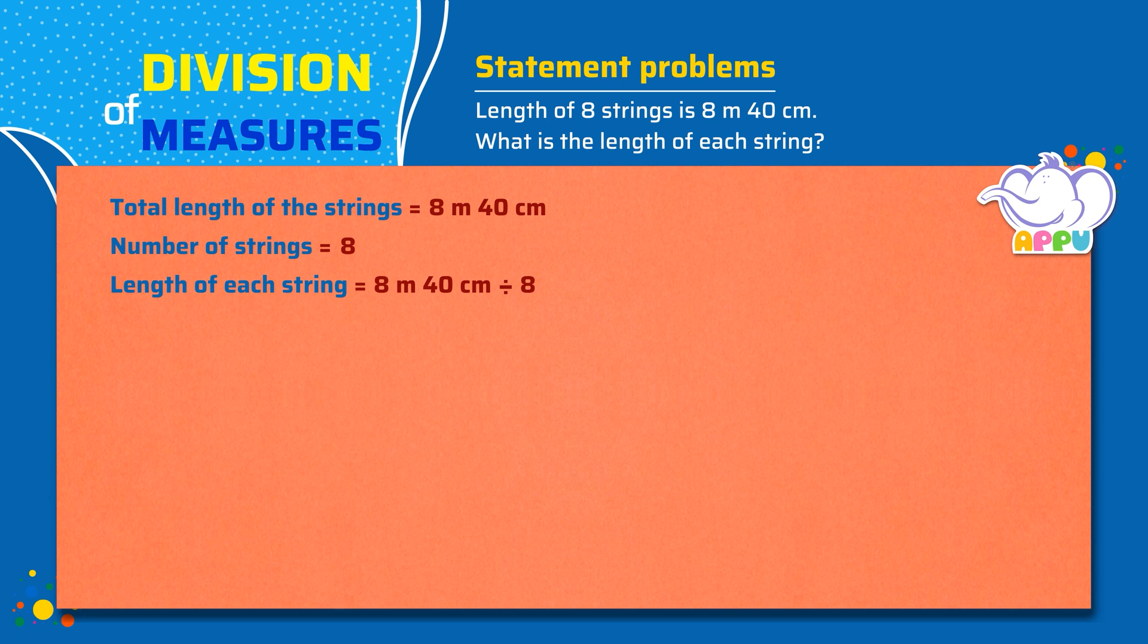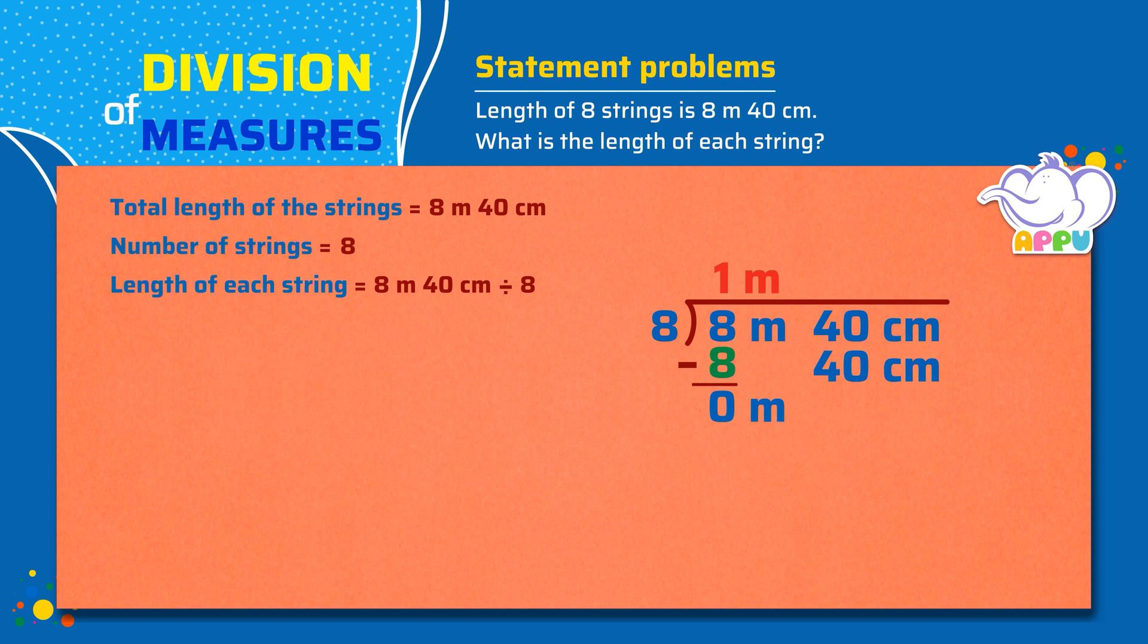We write the division bracket and write 8 outside the bracket and 8 meters 40 centimeters inside the bracket. 8 divides 8 once. That is 1 meter. And 0 is the remainder. We bring 40 centimeters down.